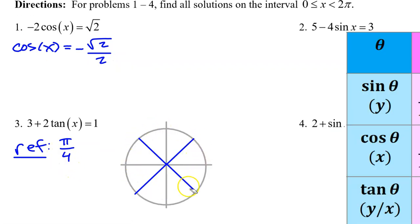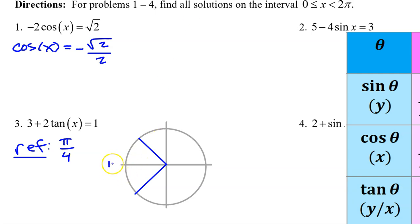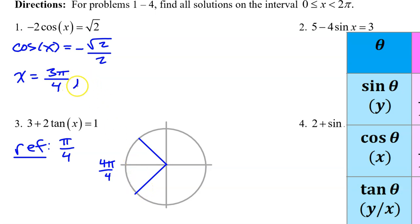On the interval from 0 to 2π, here are the 4 angles with a reference angle of π/4. Since we want cosine to equal negative radical 2 over 2, we will stick to quadrants 2 and 3 where the x-value and thus the cosine is negative. We can think of π as 4π/4, so this angle in the second quadrant is 3π/4, and this angle in the third quadrant is 5π/4. These are the two solutions to the equation on the interval from 0 to 2π.